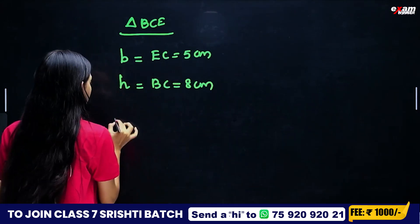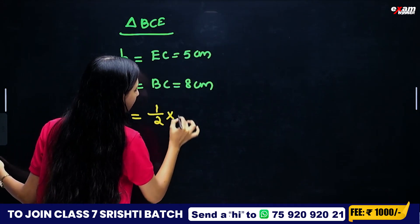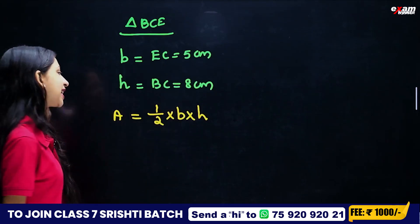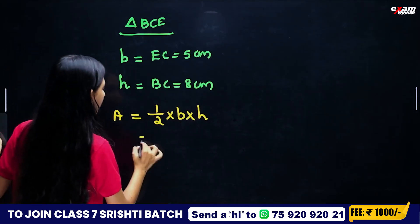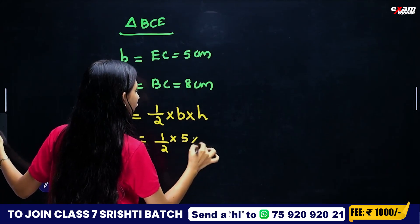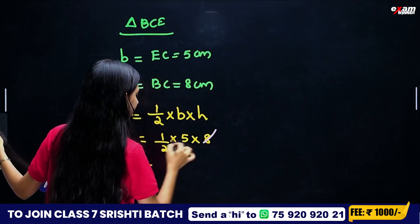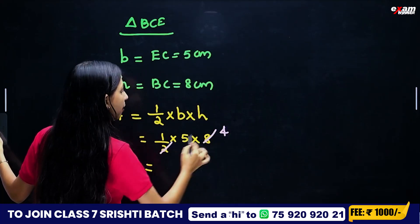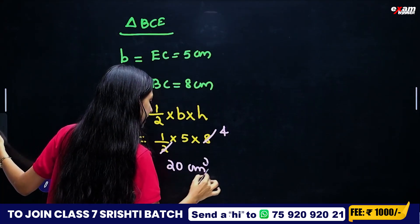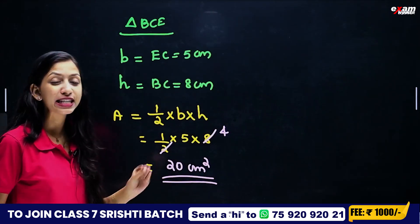Triangle area is equal to half into base into height. Half into 5 into 8 equals 40. So the area is 5 into 4, which equals 20 cm². The area of triangle BCE is 20 cm².